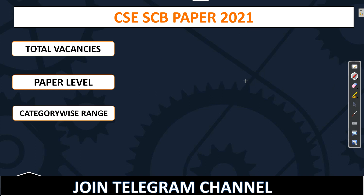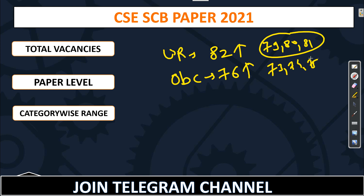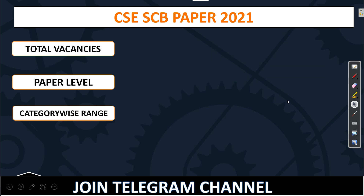Now the category-wise cutoff for CSE Scientist B. For open category, if you score 82 and above, start preparing for the interview. For OBC, 76 and above means you can prepare for the interview. Those with close marks like 79, 80, 81 for open, or 73, 74, 75 for OBC, just wait till the result. Meanwhile, don't waste time — prepare for other exams.